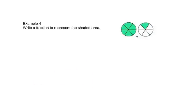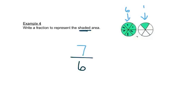Here we want to write the fraction of shaded areas. For the denominator, we look at one whole circle and count how many pieces it is divided into — it's divided into 6 pieces, so our denominator is 6. One circle has 6 shaded pieces and the other has 1 shaded piece, giving us 7 shaded pieces total. This is an improper fraction: 7 over 6.